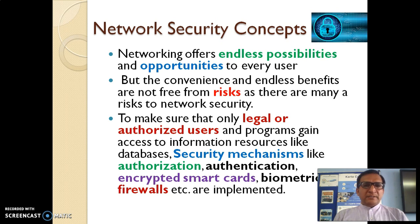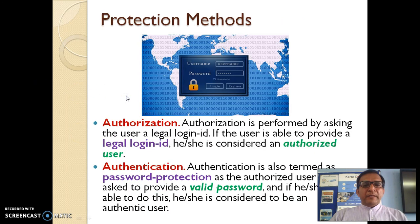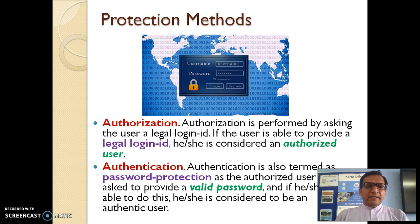To make sure that legal and authorized users are accessing the information of databases or the resources of an organization, various security mechanisms like authorization, authentication, encrypted smart cards, biometrics, and firewalls have been implemented. The two primary protection methods are authorization and authentication. Authorization is allowing a person with a legal login ID to access a database, and authentication is validating the password.